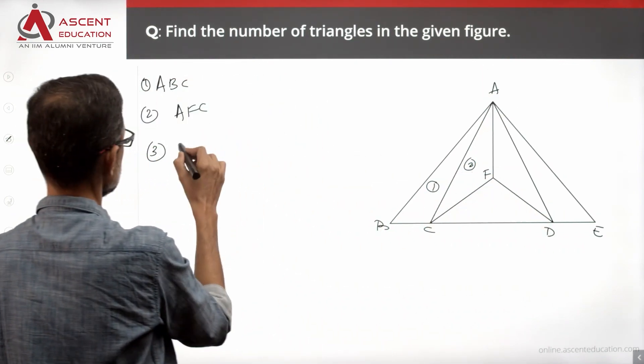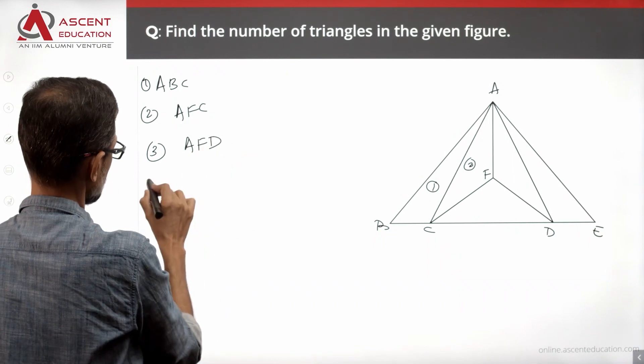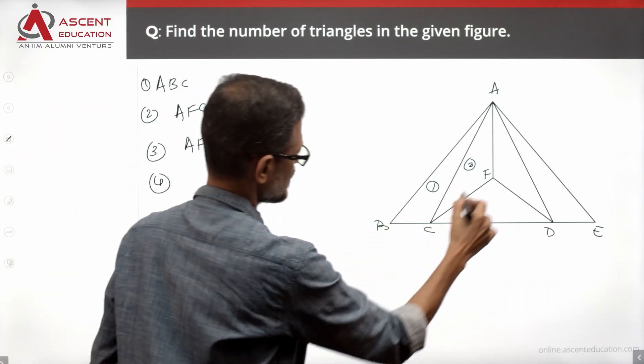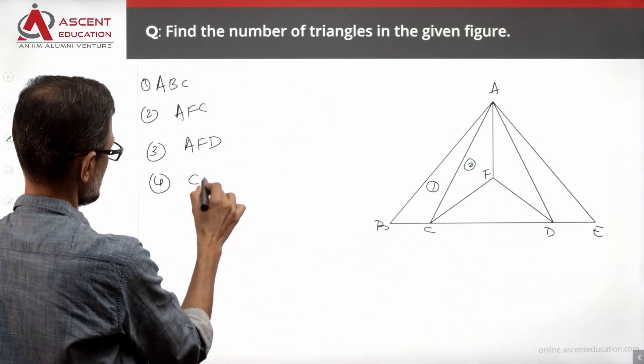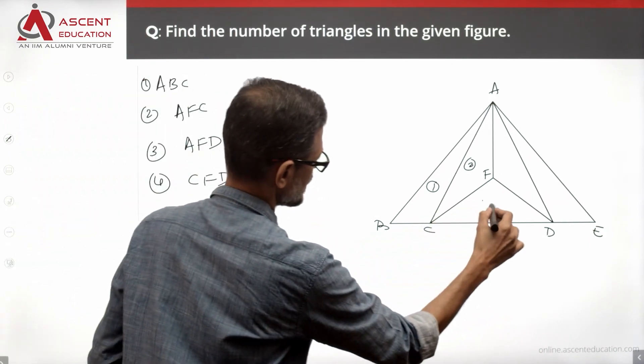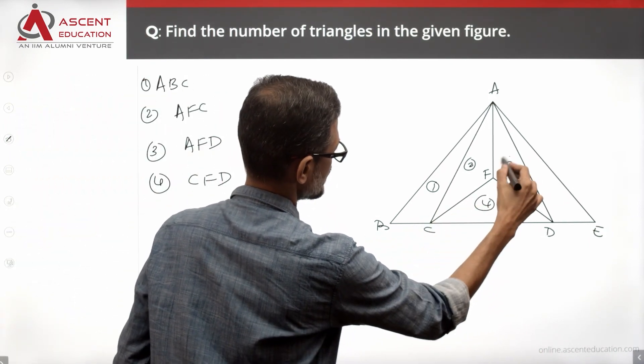A, F, D is the third triangle. Fourth triangle: C, F, D. C, F, D is the fourth triangle. This is all obvious, right?